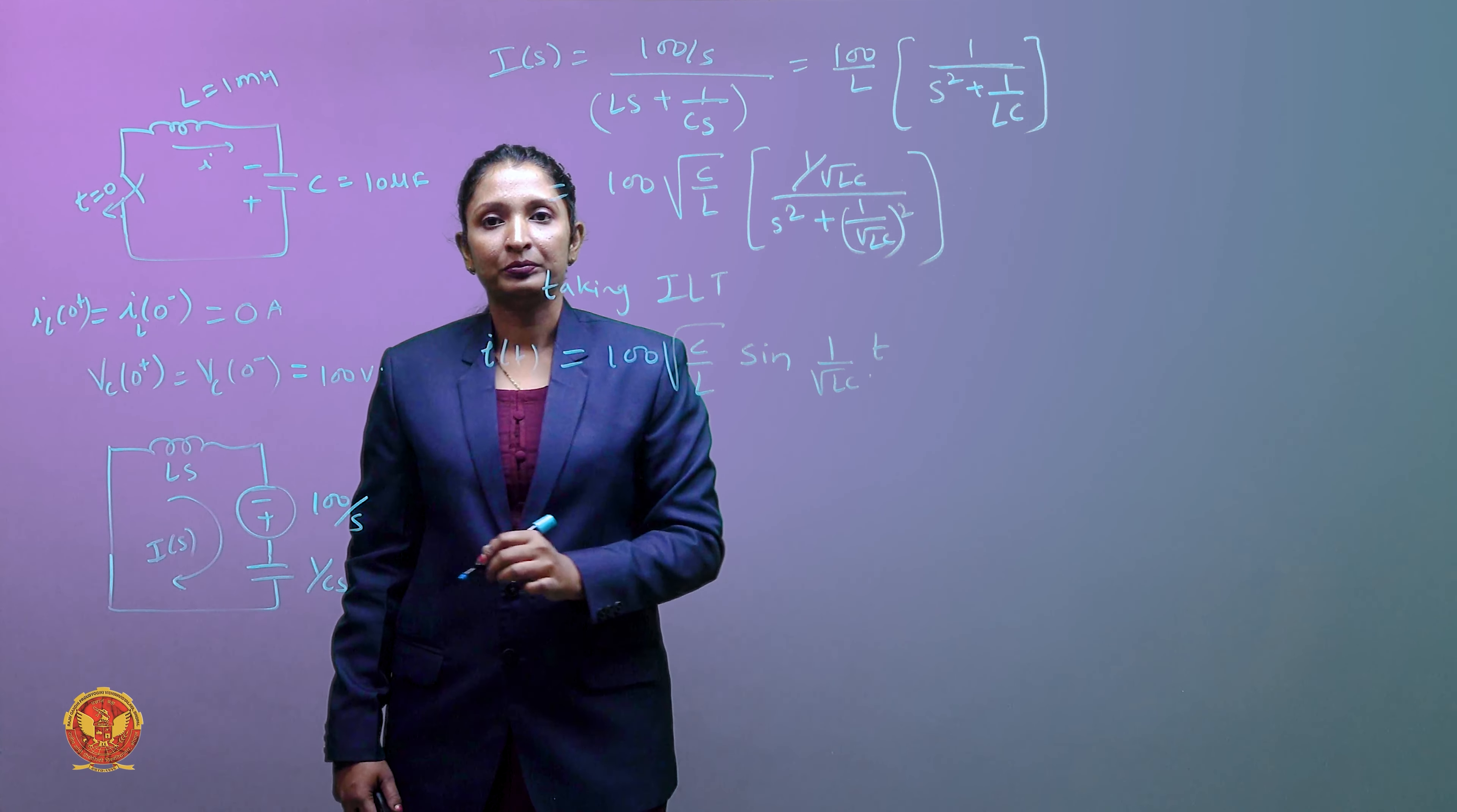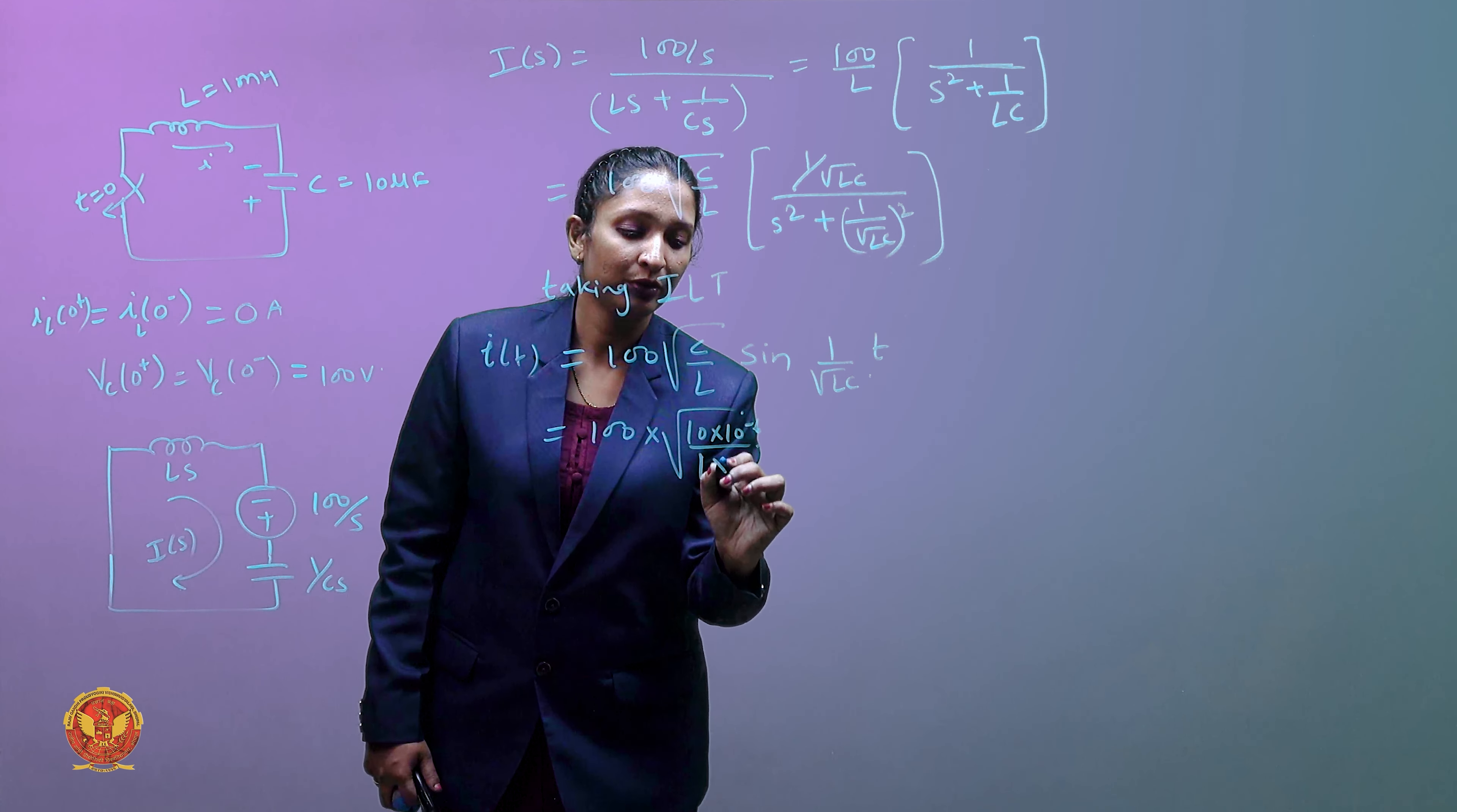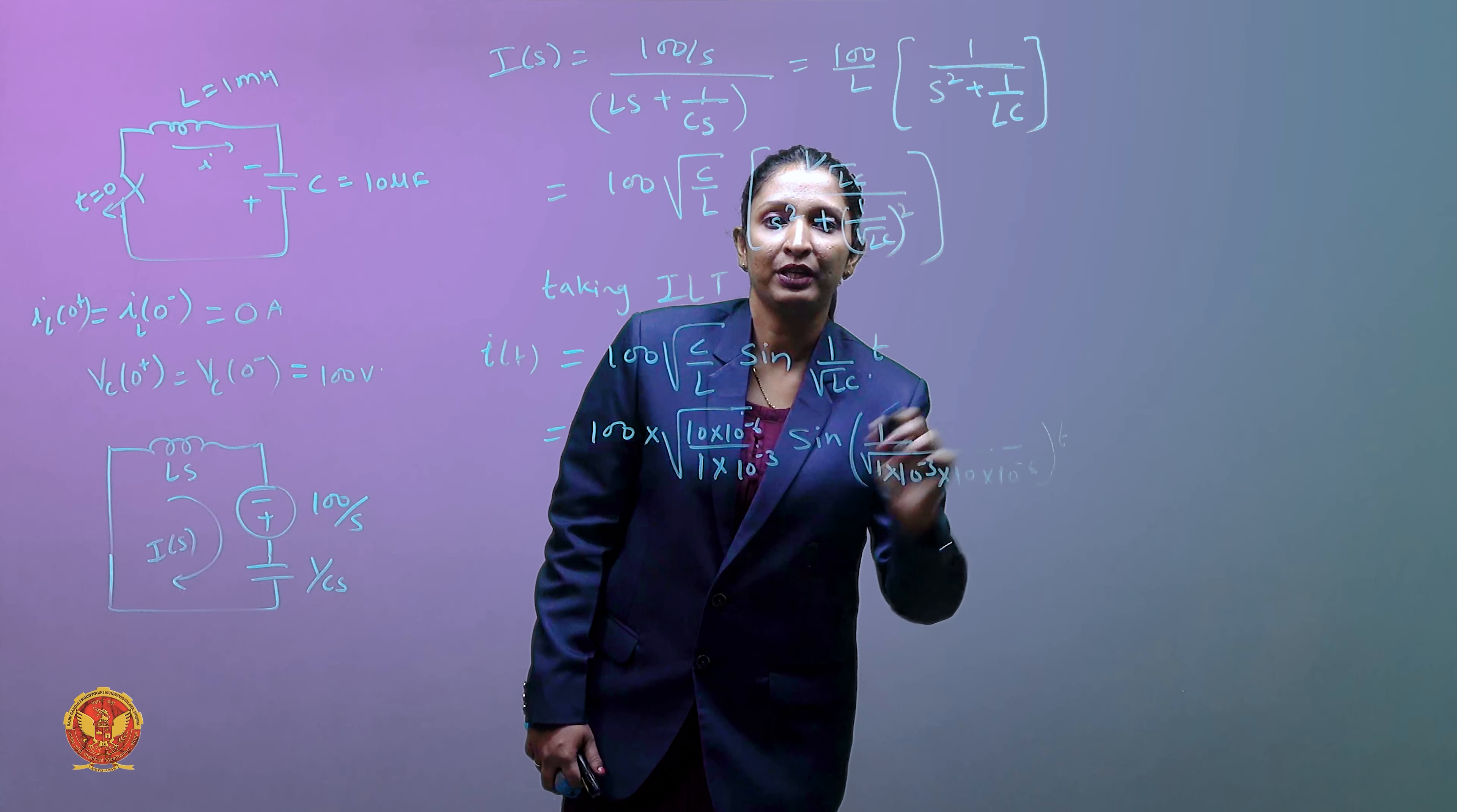This is I of t. Now all values we have, C and L, we will substitute. This will be equal to 100 multiplied by capacitor value 10 into 10 to the power minus 6, inductor value 1 into 10 to the power minus 3, sine 1 by under root 1 into 10 to the power minus 3 into 10 into 10 to the power minus 6 multiplied by t.